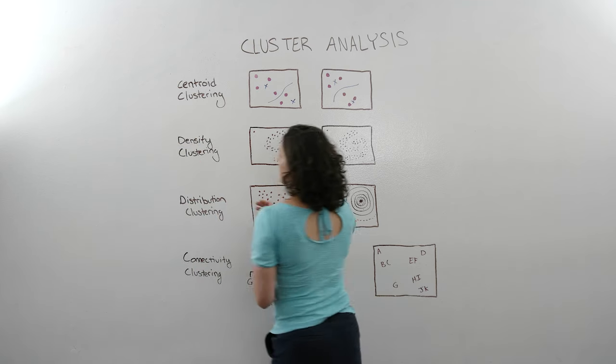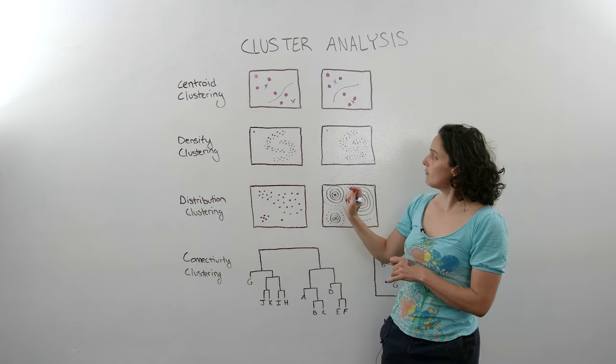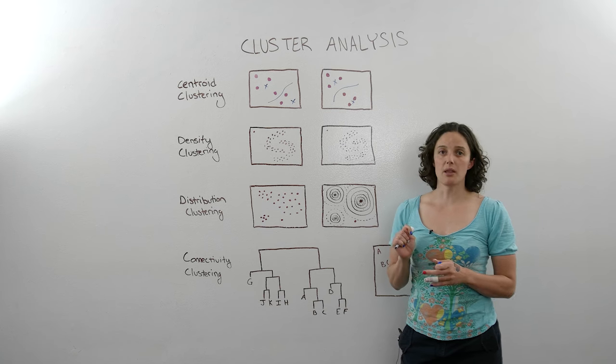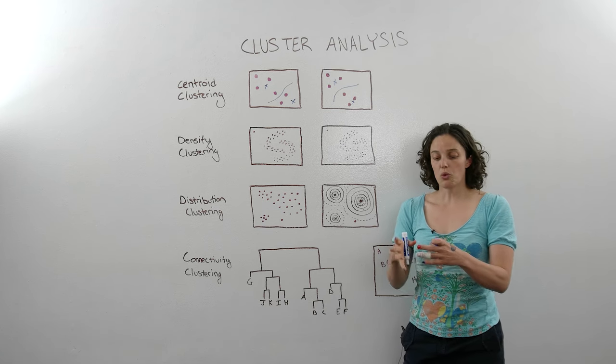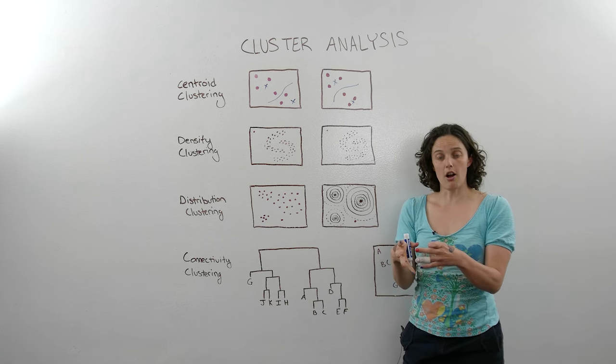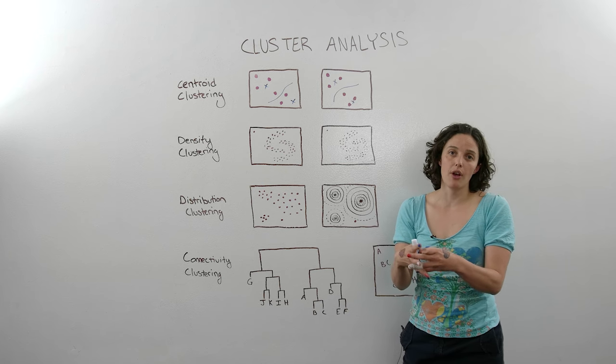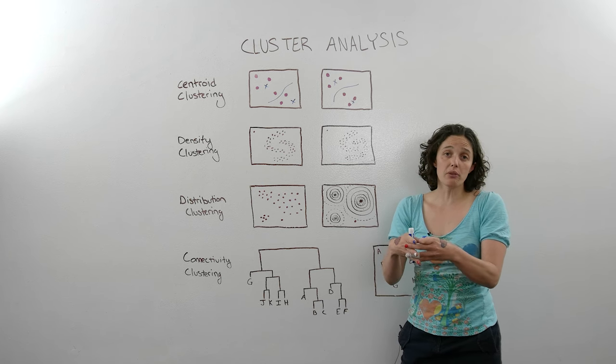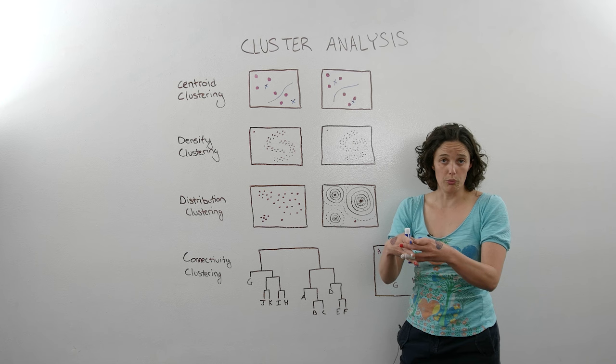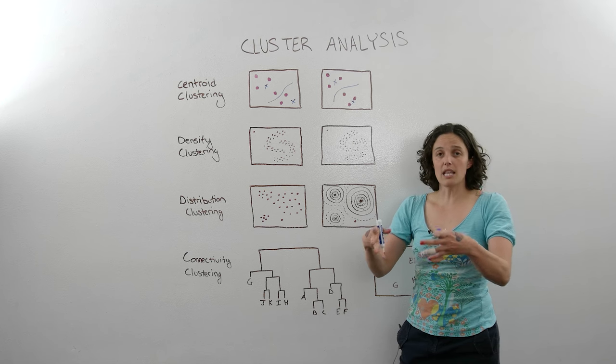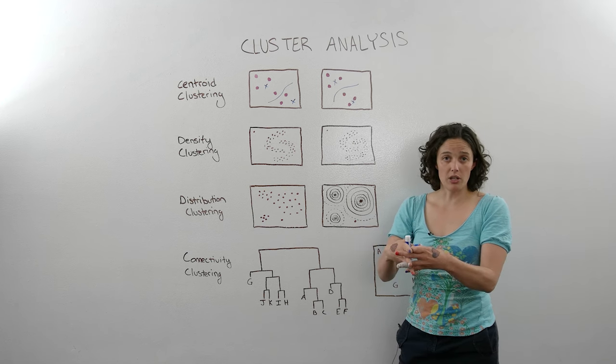So let's move on to discussing density clustering. In density clustering, the basic idea is you group people based on how densely they're populated together. So if you have a lot of people that are closely related, they're considered to be a single group. The less dense they become, they're less likely to belong to the same group.